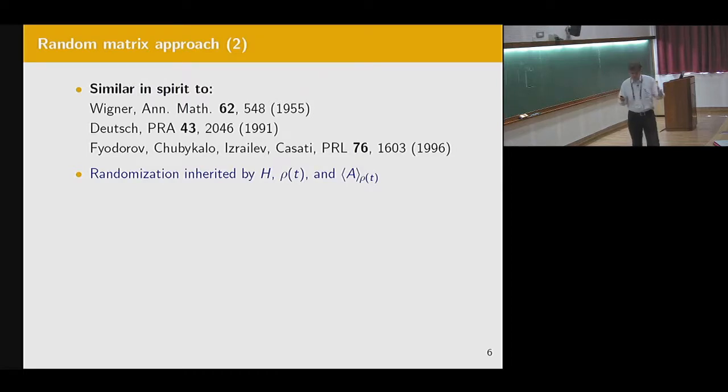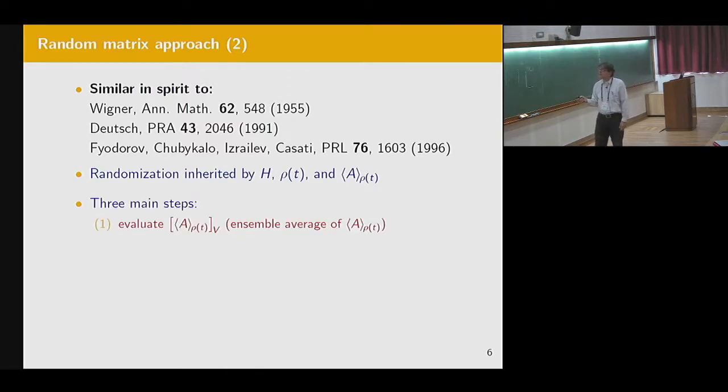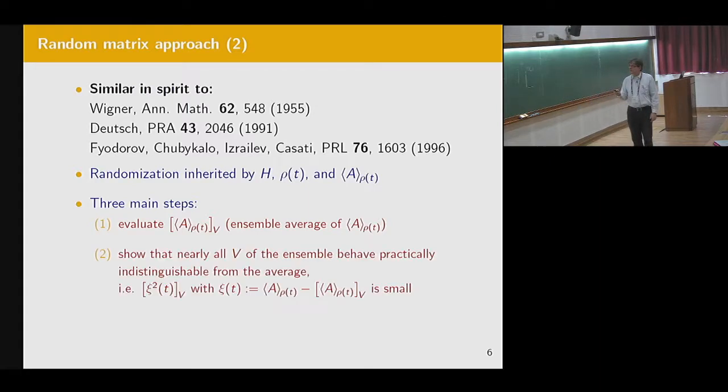So now the perturbation is randomized. Not the unperturbed, but the perturbation is randomized. So H is now also a random matrix of a special structure. And therefore, the perturbed evolution is also randomized. And therefore, also the expectation values are randomized by the randomness of the perturbation. So the three main steps will be: evaluate the ensemble average of these random expectation values over the ensemble. That's the first step.